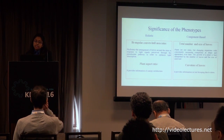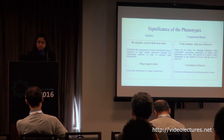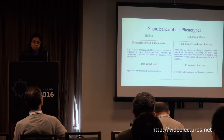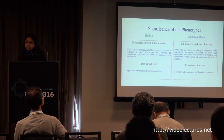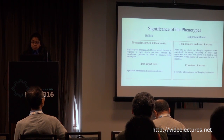Regarding the significance of these phenotypes: biangular convex hull area ratio determines the rotation of the plant, meaning the phyllotaxy — defined as the arrangement of leaves around the stem in response to light signals perceived through the phytochrome pathway in order to optimize light interception. Plant aspect ratio provides information on canopy architecture. Plants are not static but changing organisms, and the growth pattern can be best interpreted by the total number of leaves and the size of each leaf. Curvature of leaves was also computed, providing information on leaf drooping due to drought stress specifically.